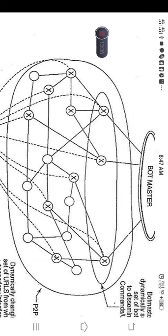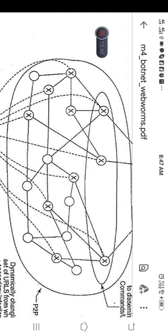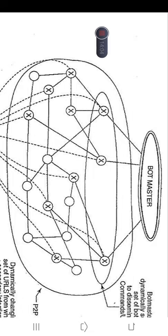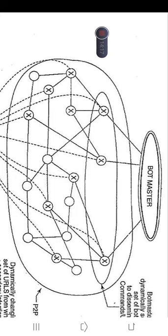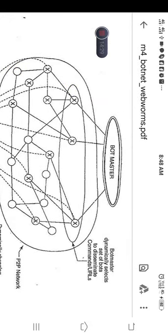Normal nodes can send request commands to various other nodes in the network, but they are not aware that bots are present. When a request is sent, it can be processed by a bot which sends an infected file to the normal node making the request. The bot master dynamically selects a set of bots to disseminate commands or URLs, and can send commands or URLs from where the code should be downloaded to the command and control servers.